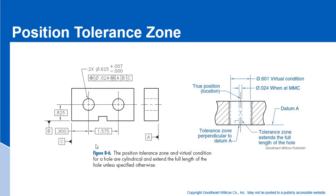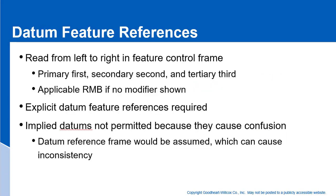That is our virtual condition boundary — it contains both the positional tolerance and the size tolerance. The feature tolerance zone is diametrical. Datum feature references are read left to right in the feature control frame: primary first, secondary second, tertiary third.